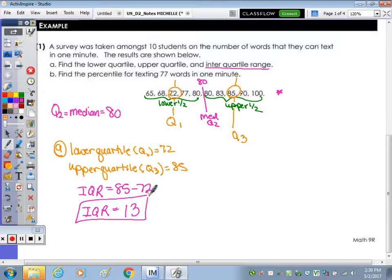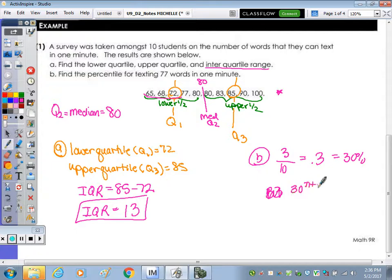Part B, find the percentile for texting 77 words. So now in part B, to find the percentile, there are three words less than 77, out of a total of 10, which 3 tenths is .3. You can multiply that times 100, but .3 is what percent? 30%. And we write the percentile, we usually write the 30th, not 33, but 30th, just like the 25th, the 75th, the 50th percentile.